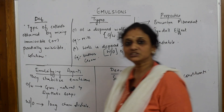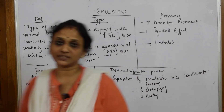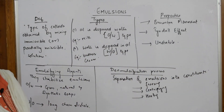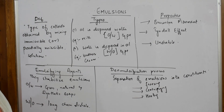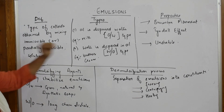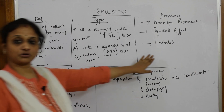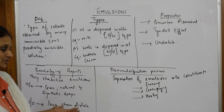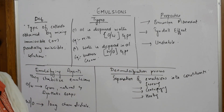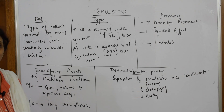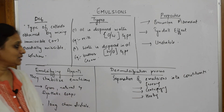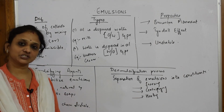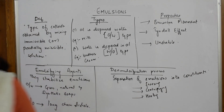So those are your emulsions. To summarize the board: definition, types, properties, emulsifying agents — you can add many more examples since this is typically asked for only two marks — and finally the de-emulsification process.